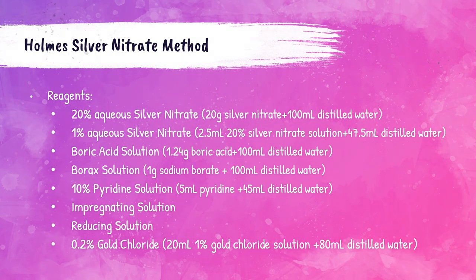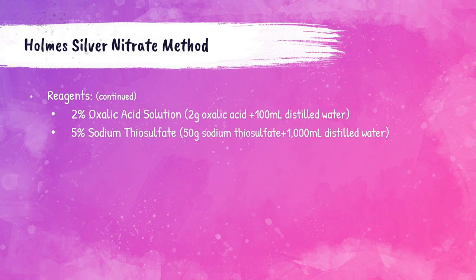Reagents needed for the Holmes silver nitrate method include 20% aqueous silver nitrate, 1% aqueous silver nitrate, boric acid solution, borax solution, 10% pyridine solution, an impregnating solution, a reducing solution, 0.2% gold chloride, 2% oxalic acid solution, and 5% sodium thiosulfate.